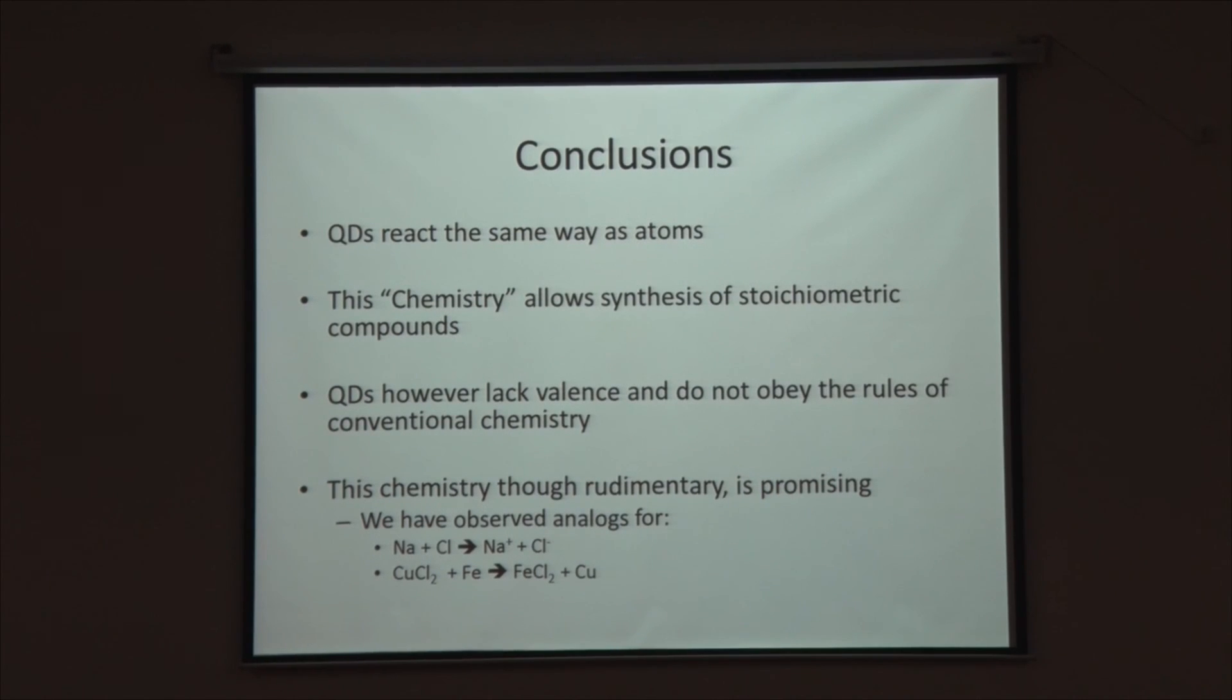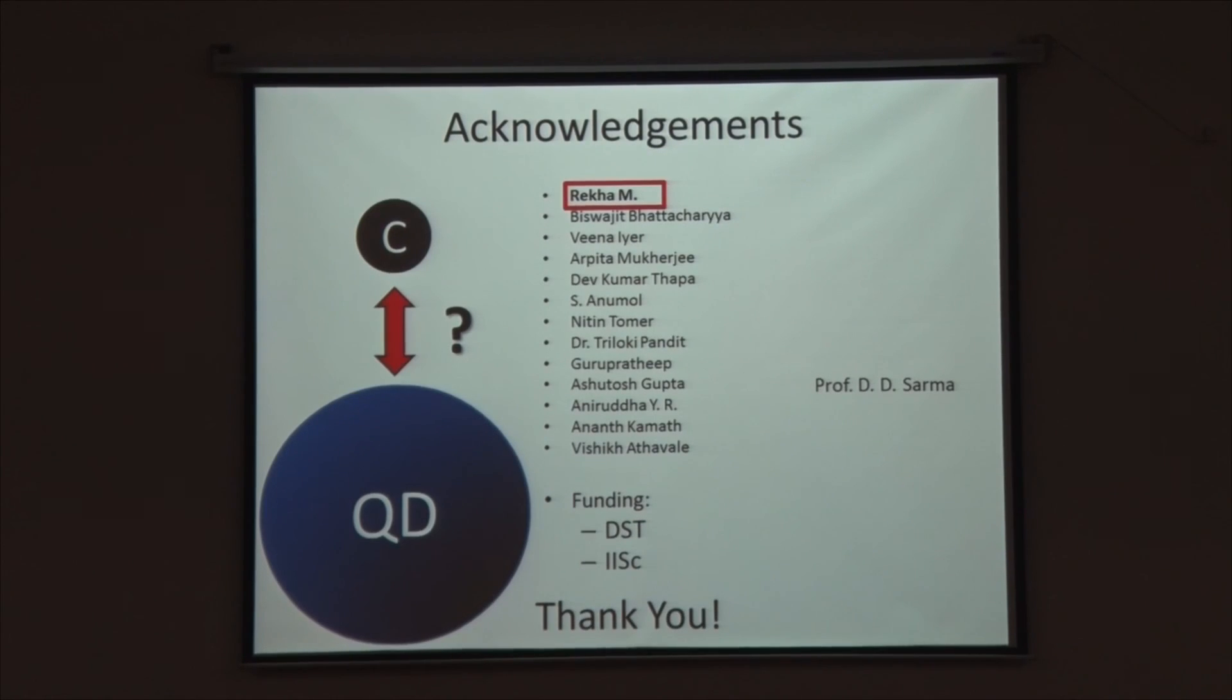I will at this point conclude since my time is up. What I have tried to show is quantum dots do react the same way as atoms if we try to make them to. This essentially lets them have a chemistry, but this is guided by a very different set of rules. This while very rudimentary is promising. We at least have two examples of reactions so far. But what we really hope for one day is to have the quantum dot analog for carbon and then this will get really exciting.